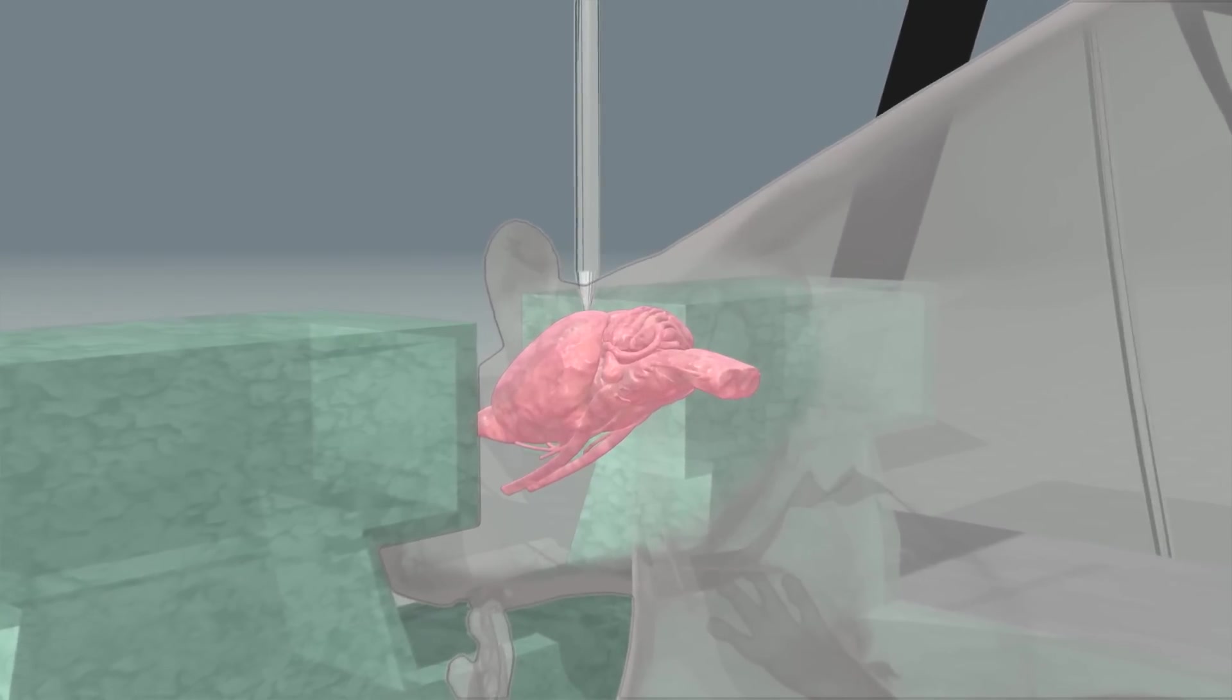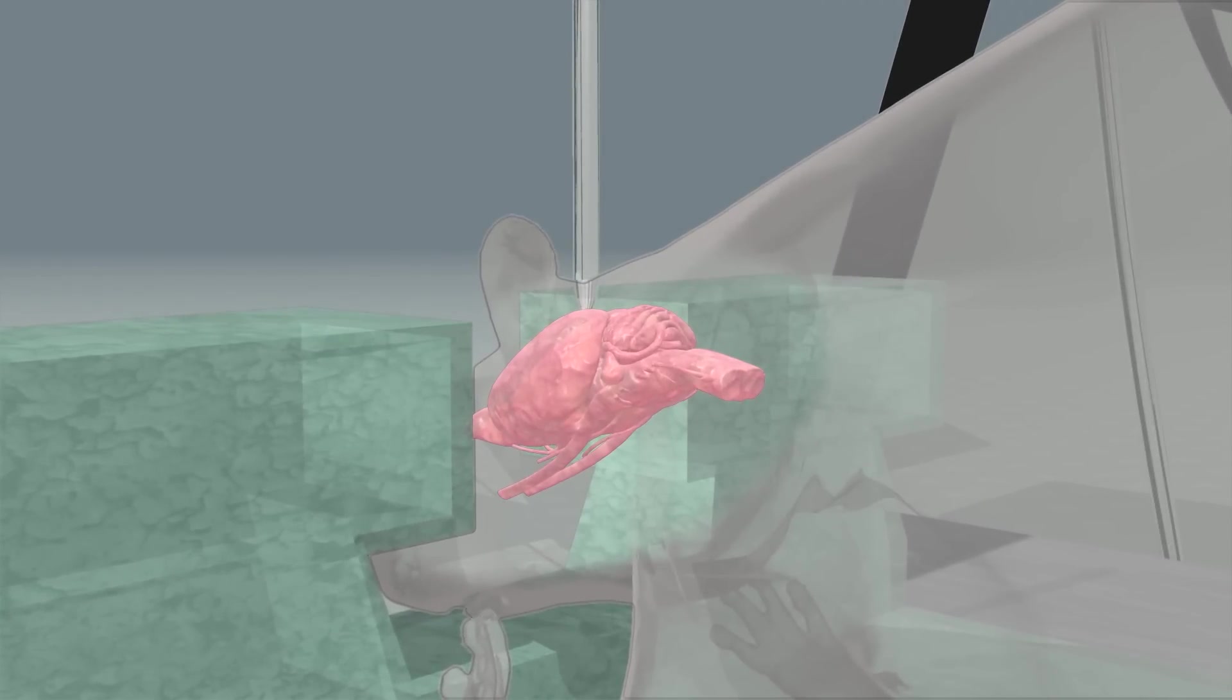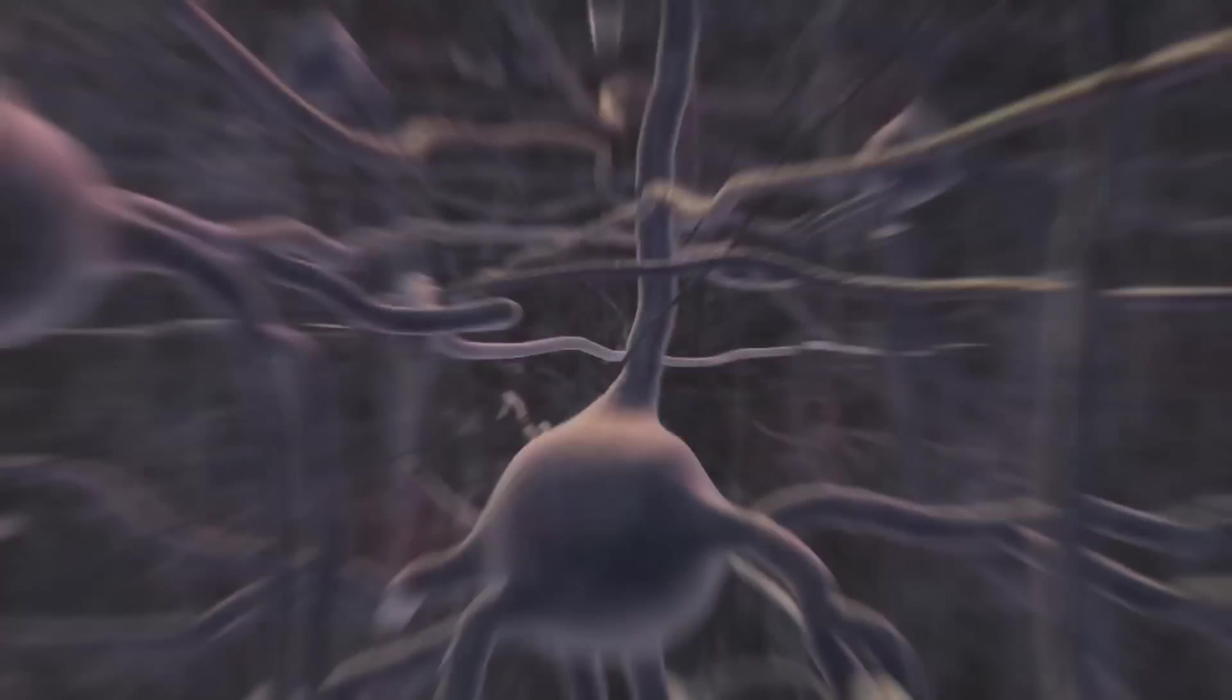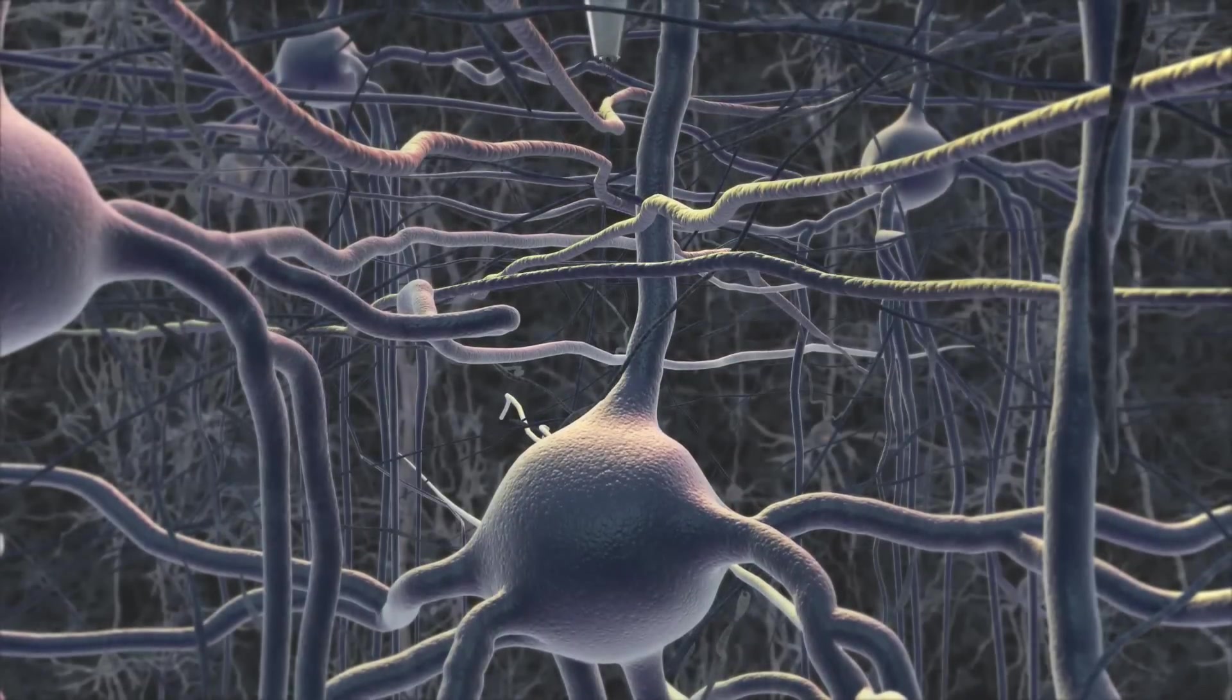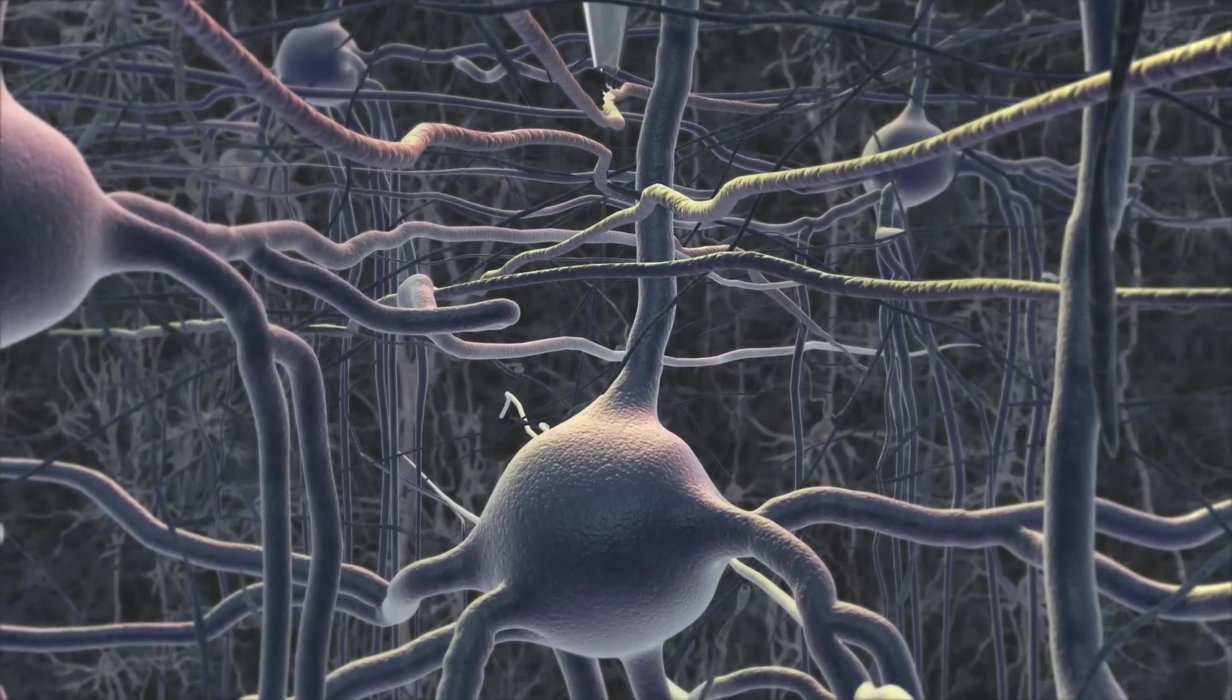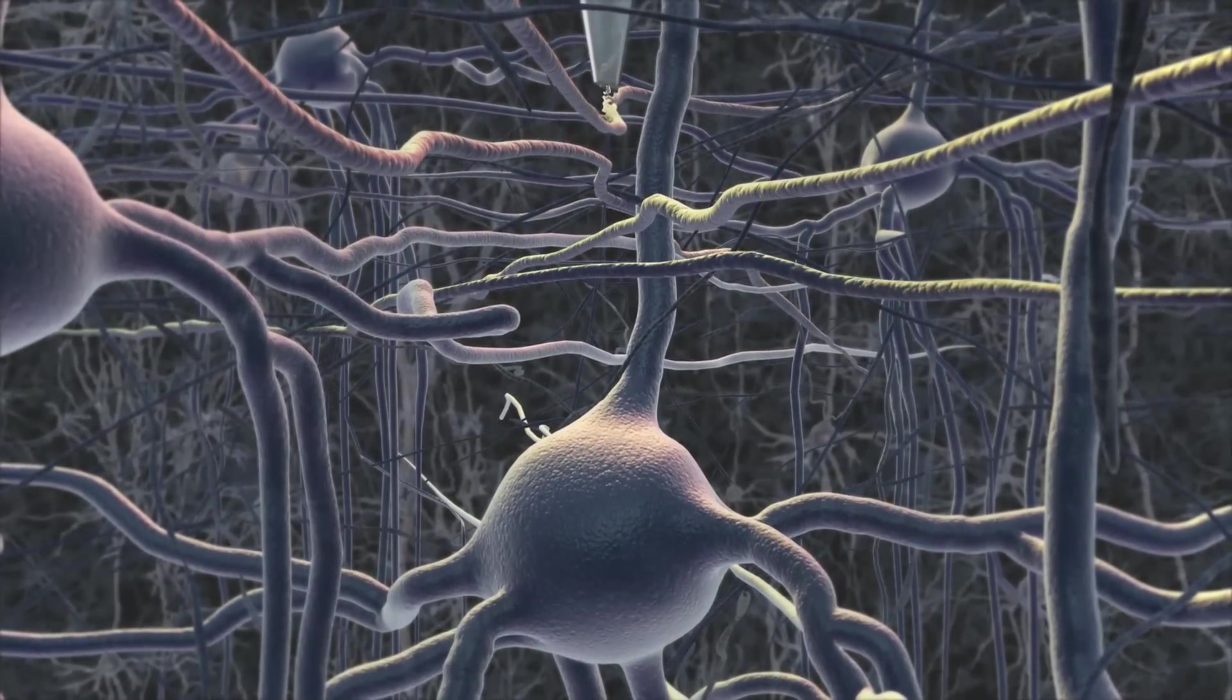The robot lowers the pipette into the brain, looking for a cell to record from. Pressure is applied to the inside of the pipette so that it constantly ejects a small amount of liquid to keep the tip clean.